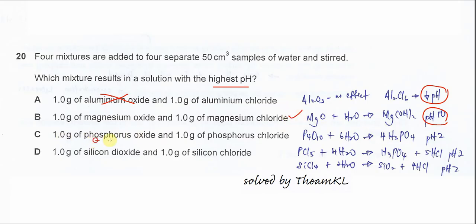C, 1.0 g of phosphorus oxide and 1.0 g of phosphorus chloride. For the phosphorus oxide, which is P₄O₁₀, when it dissolves in water, it will form phosphoric acid H₃PO₄ and HCl. The pH of the solution is also around 1 to 2. Therefore C cannot be the answer because it's acidic, meaning lower pH.